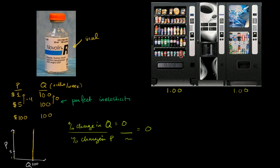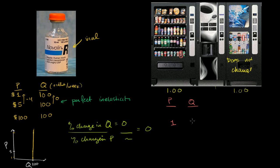We're going to assume that this vending machine right over here doesn't change — it's just going to be consistently charging a dollar for a can of Coke, and they're sitting next to each other. So let's think about the demand curve for Coca-Cola in this vending machine right over here. Let's look at price and quantity demanded. So if the price is $1, then odds are it's going to get about half of the sales per week. Let's say that ends up being 100 cans per week.